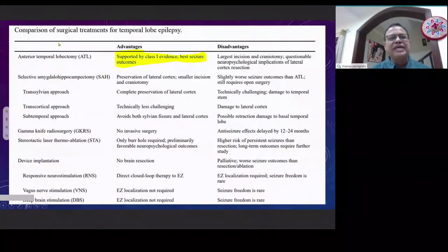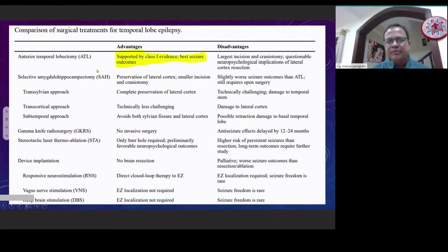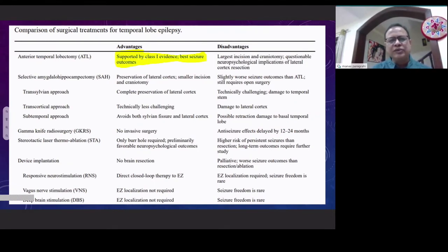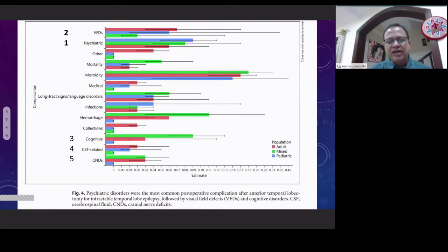If you compare all the surgical techniques available for temporal lobe surgery, there is only one technique — temporal lobectomy with hippocampectomy — which has Class I evidence and has the best seizure outcome. So we'll discuss more about the complications and avoidance of this technique. There are five common complications in anterior temporal lobectomy and hippocampectomy, and I'll address how to reduce each one.